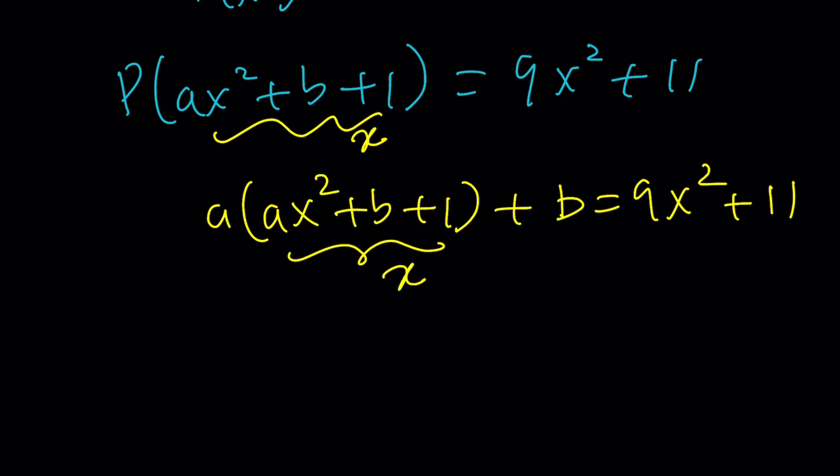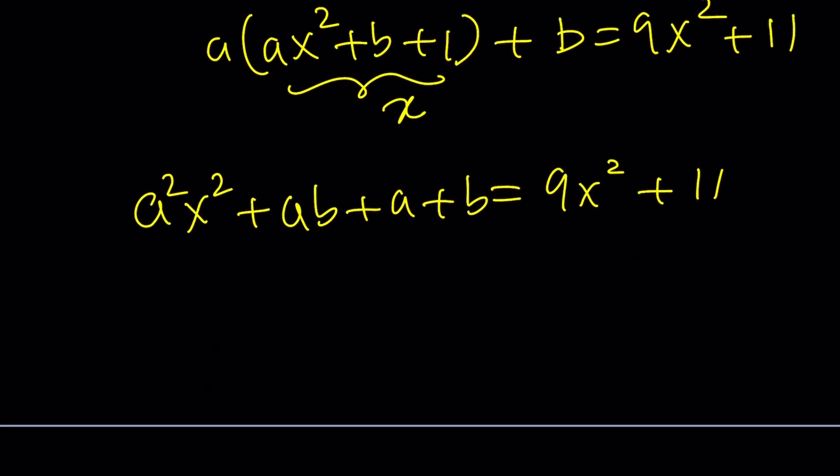We have a squared x squared plus ab plus a plus b equals 9x squared plus 11. From here we get a system of equations. This is our constant term, which is equal to 11. And this is the coefficient of x squared, which is 9.